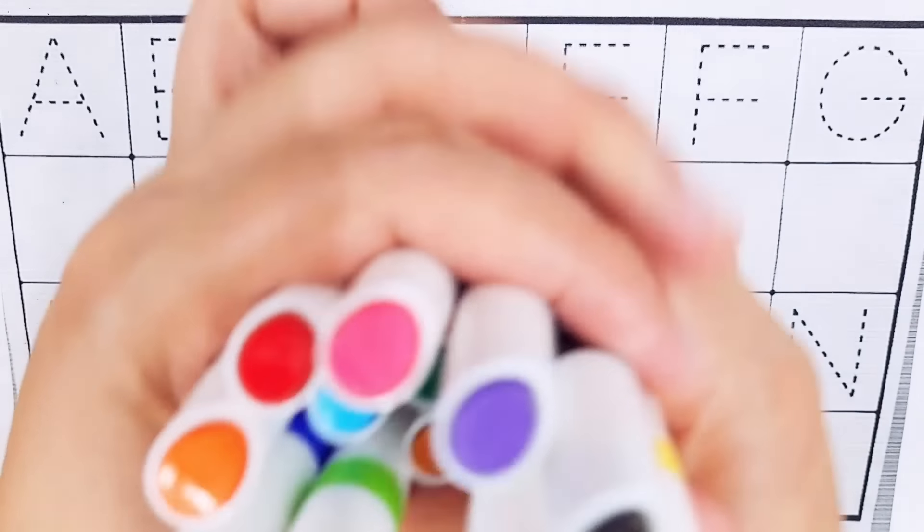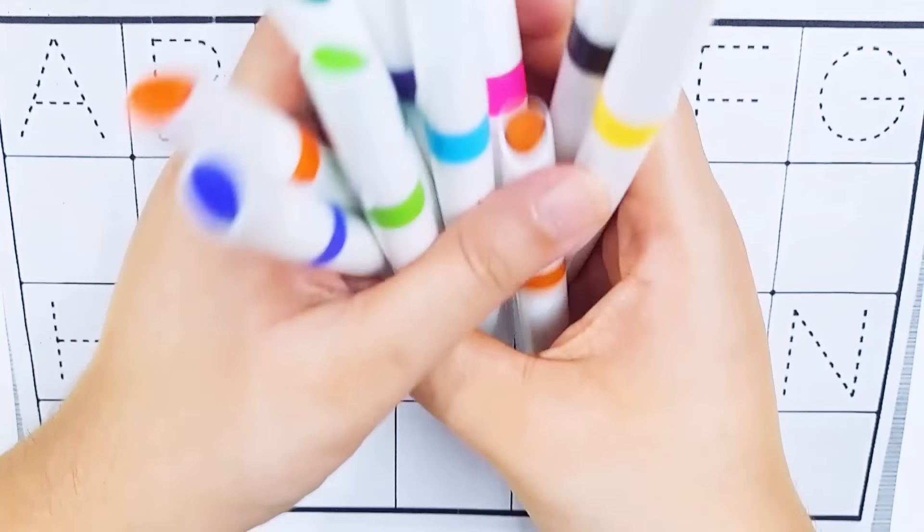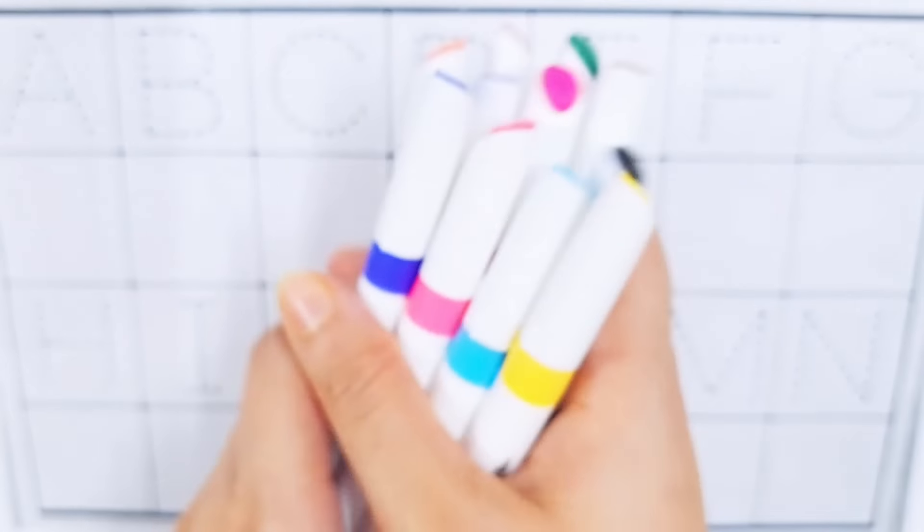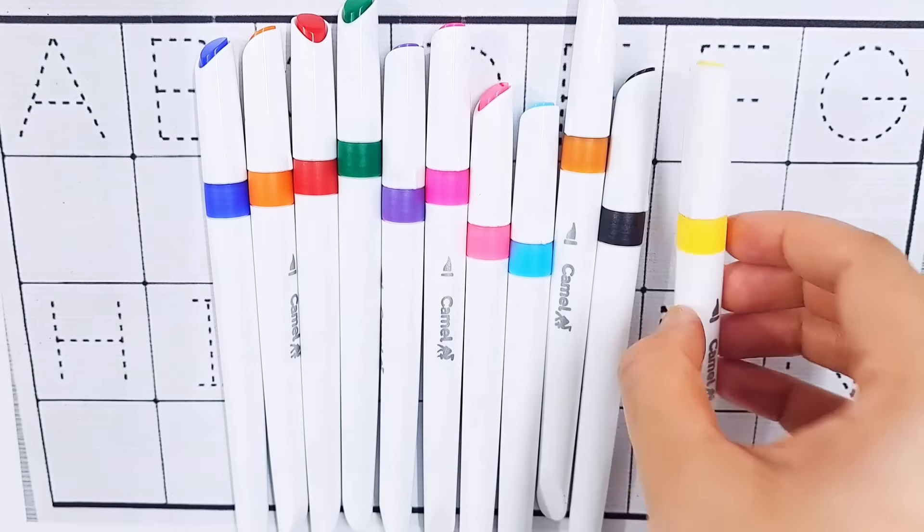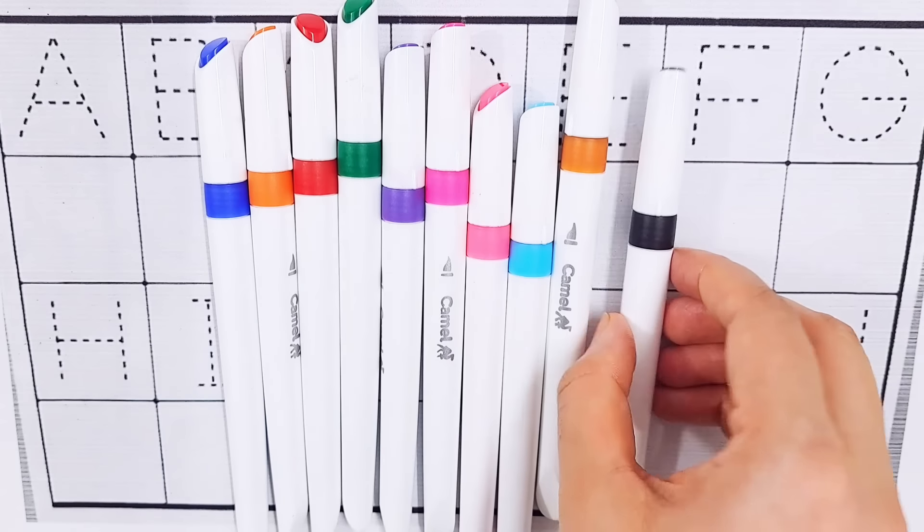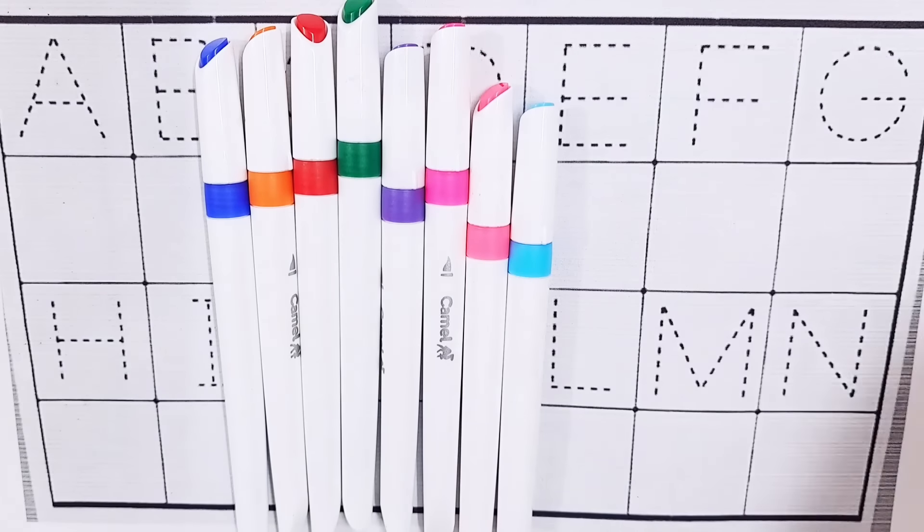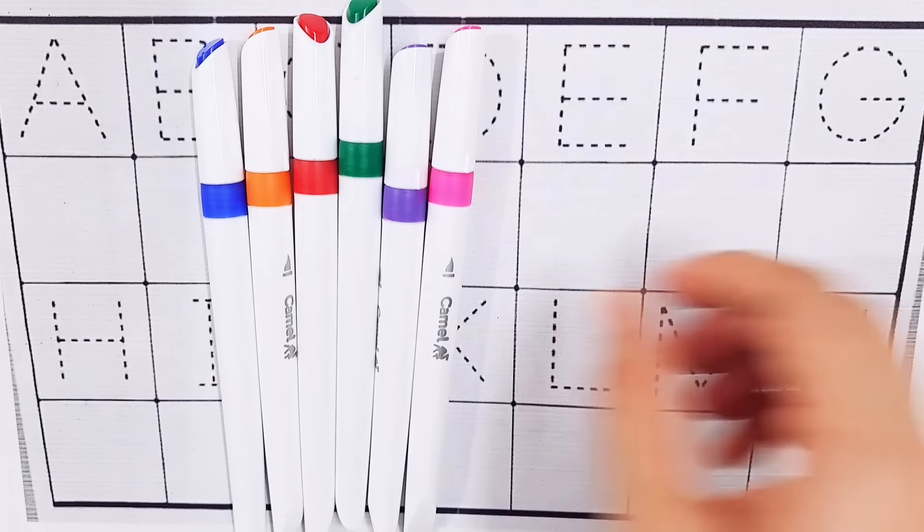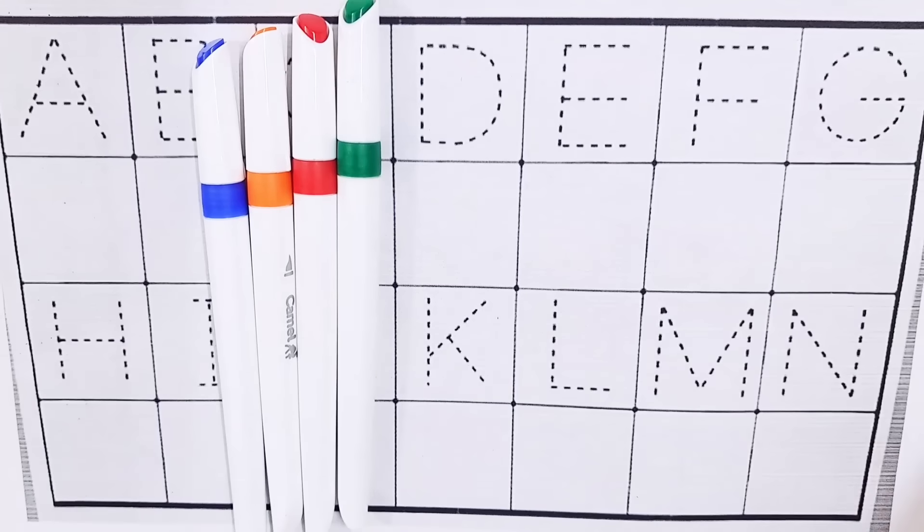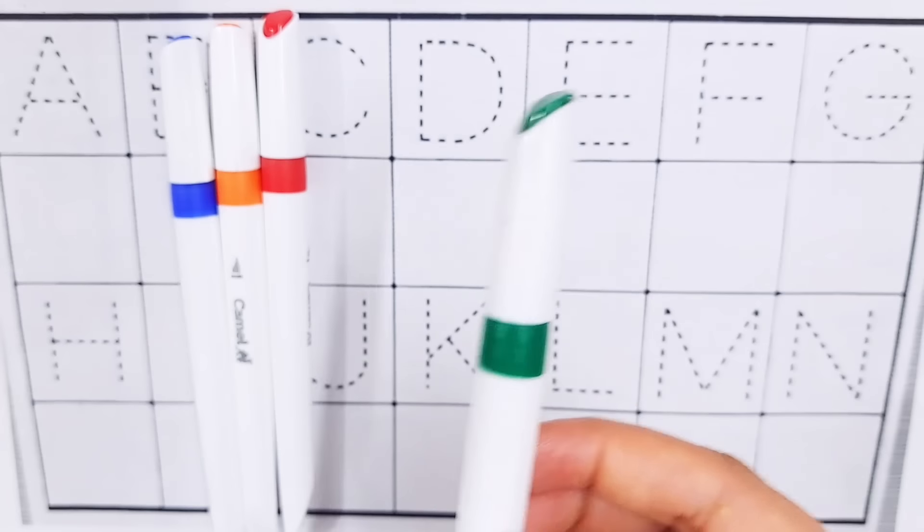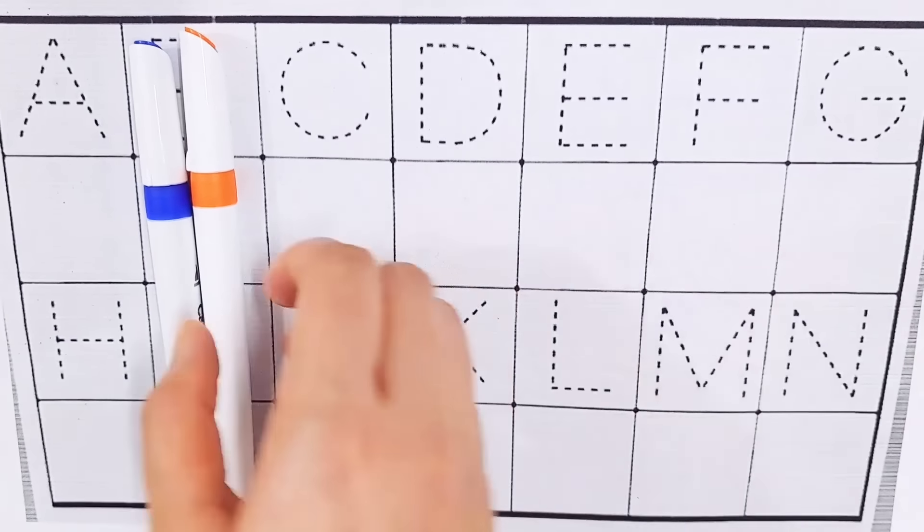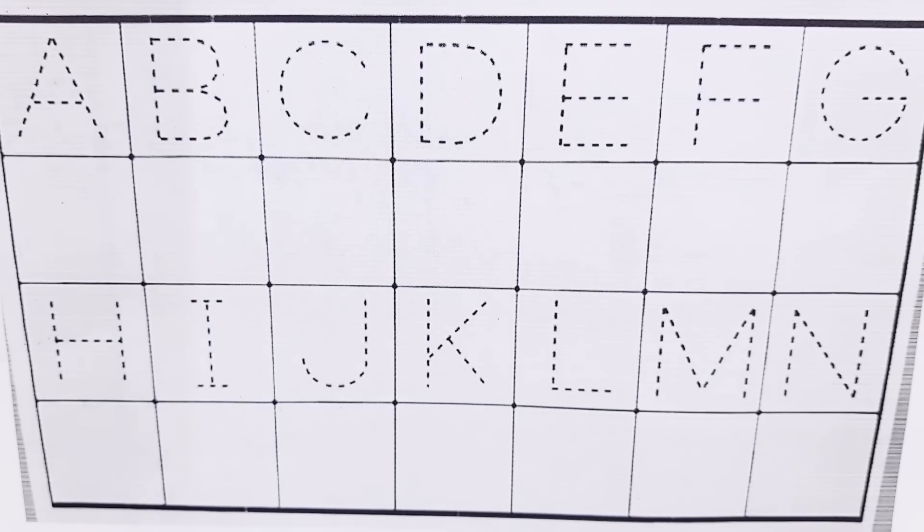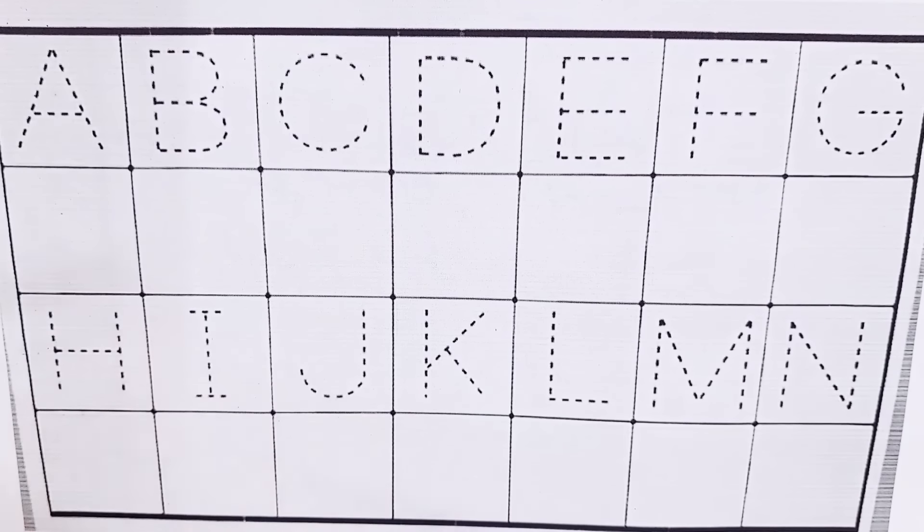Hello kids, let's learn some colors. Yellow color, black color, brown color, sky blue color, pink color, purple color, violet color, dark green color, red color, orange color, dark blue color.